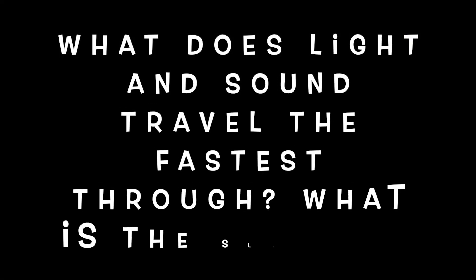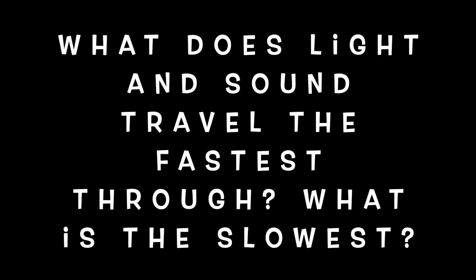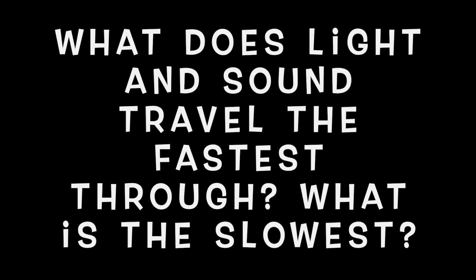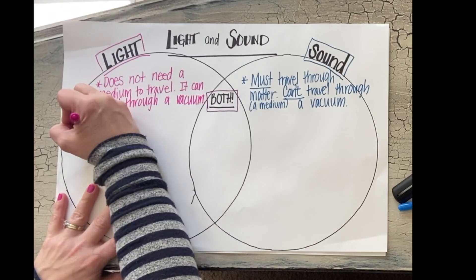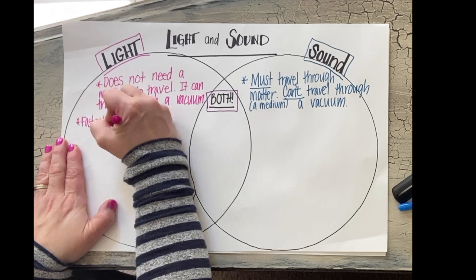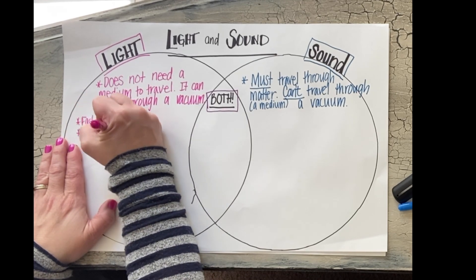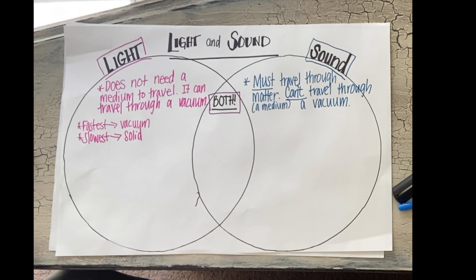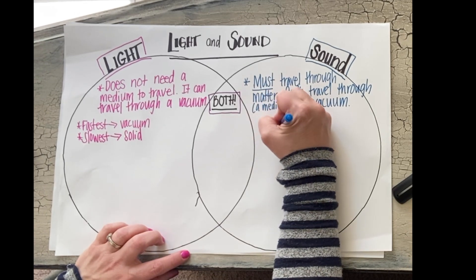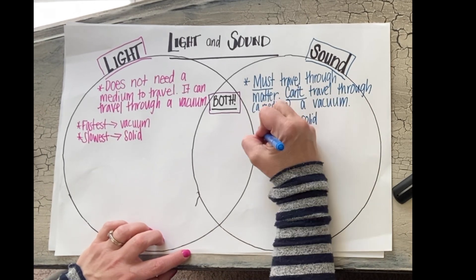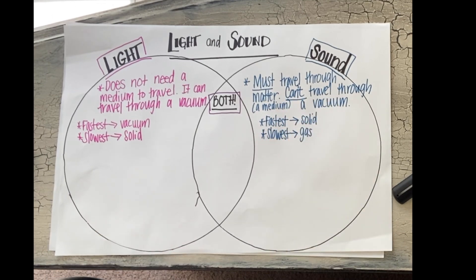What does light and sound travel the fastest through? What do they travel the slowest through? Is that a way that they are alike or different? Light travels the fastest through a vacuum and the slowest through a solid. Sound is the opposite — it travels the fastest through a solid and the slowest through a gas.